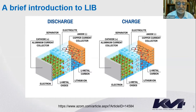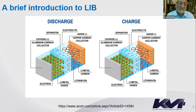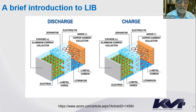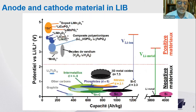During discharge, lithium is de-intercalated from the graphite anode and re-intercalated back into the cathode. As a result, the anode voltage increases and the cathode voltage decreases, so the cell voltage decreases during discharge while lithium ions circulate in the electrolyte from anode to cathode. This charge/discharge operation can be repeated hundreds or even thousands of times; on average a lithium-ion battery delivers between 500 and 1500 cycles.